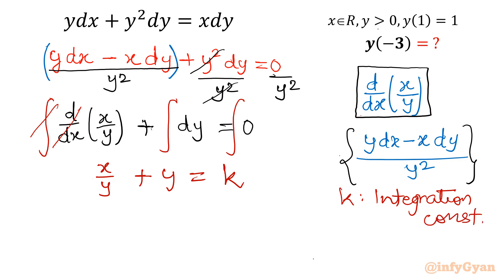Now the point is how we will find out k. Then we have to target y of minus 3. So how we can find out? For finding k value, this information is in the question: y of 1 is 1. That means at x equals 1, y equals 1.